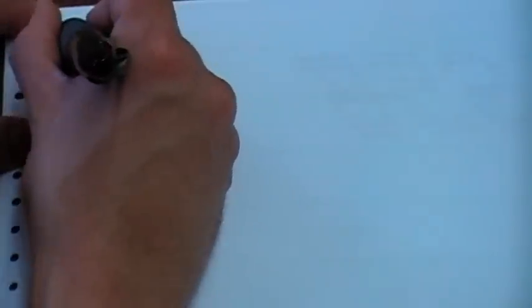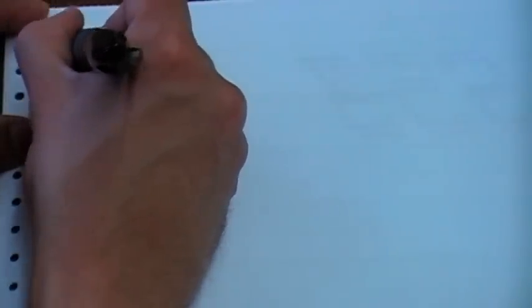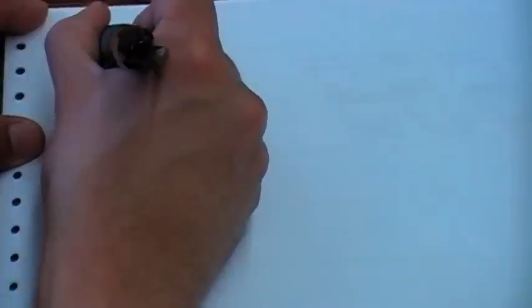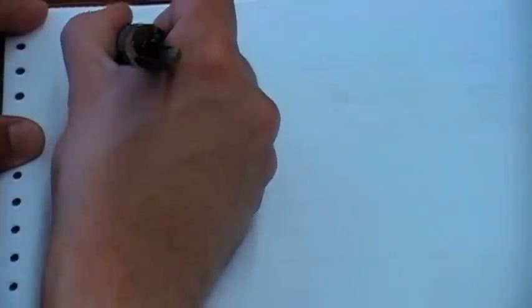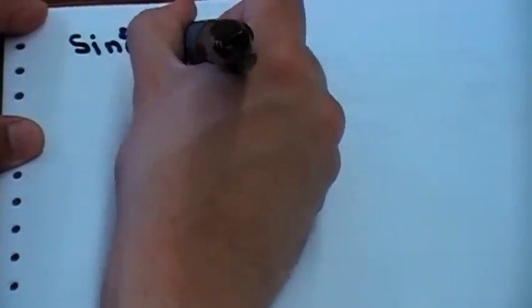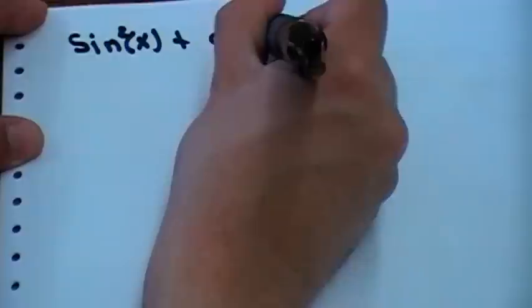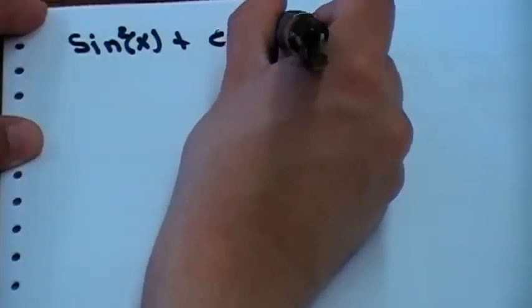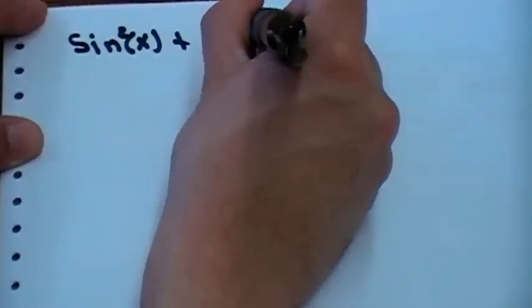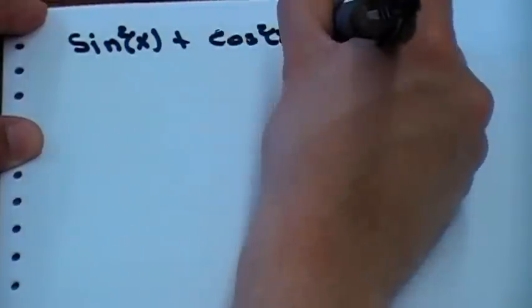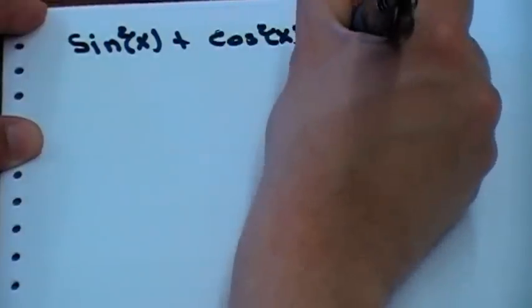Okay, first things first. We need to know — and I hope you guys are familiar with it — the sine of x squared plus the cosine of x squared equals one.